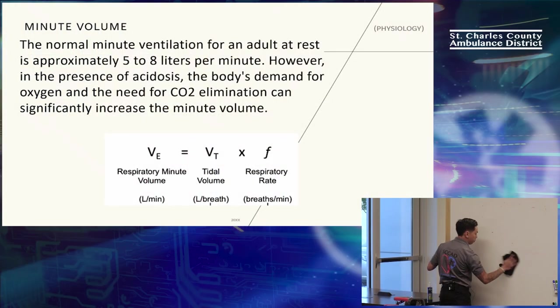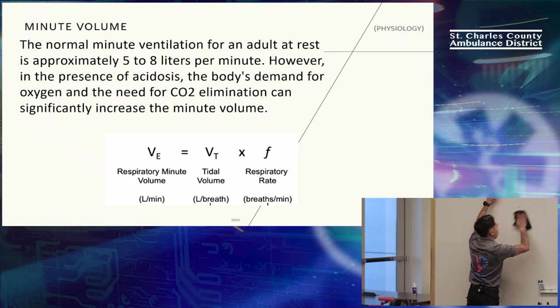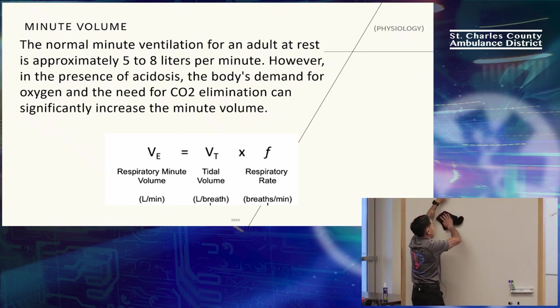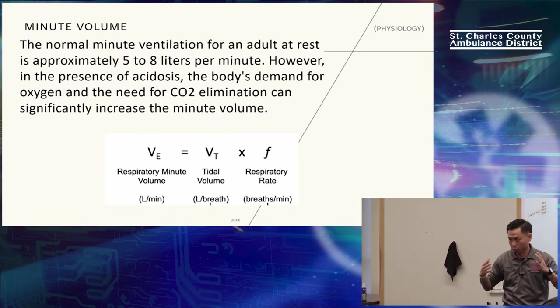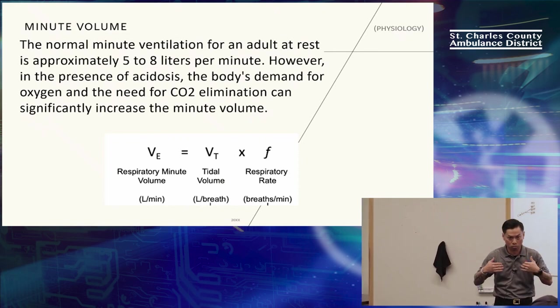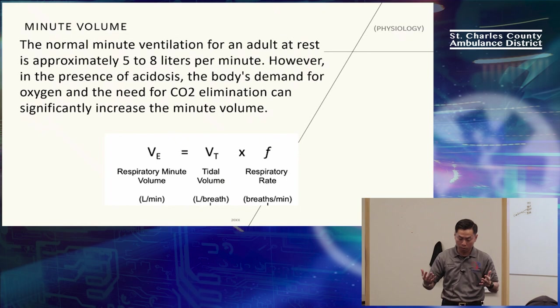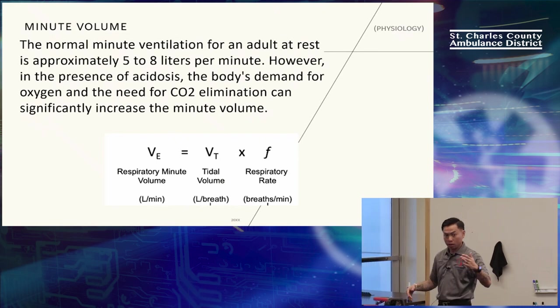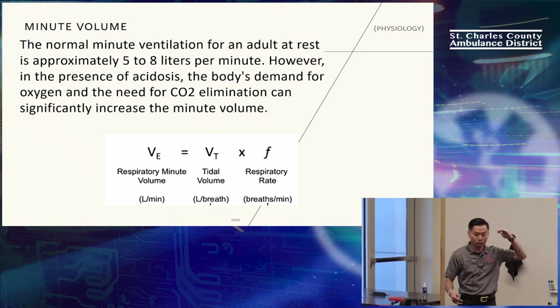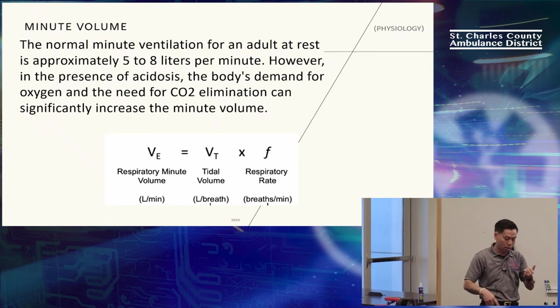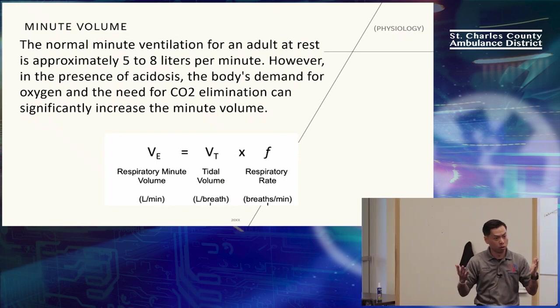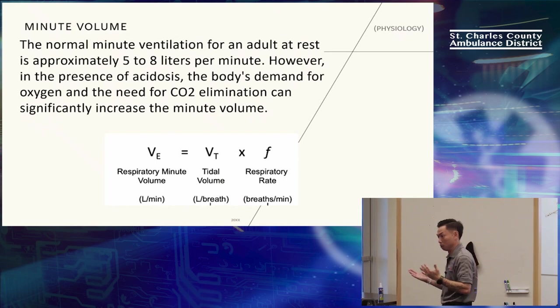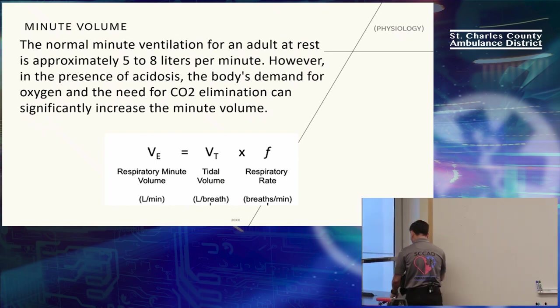In its simplest form for minute volume, minute volume is the amount of air you move a minute to survive in the state that you're in. Right now, as we sit, we have to move anywhere from 4 to 6 liters of air a minute to survive. It's the amount of air that we have to move to survive. As we get ill, more acidotic, and we have to compensate, that number goes up.